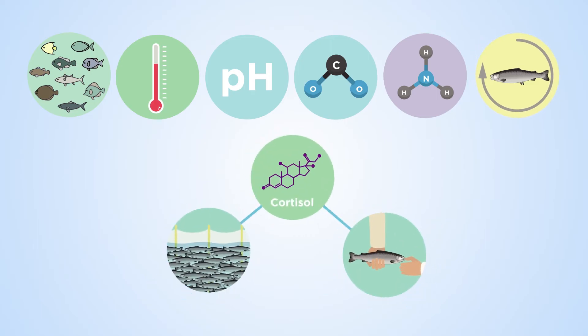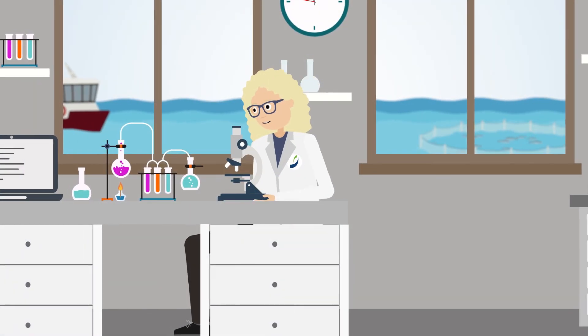These include fish species, water temperature, pH, carbon dioxide, ammonia, fish age, and handling or overcrowding. In order to maximize fish health and, consequently, economic gain...